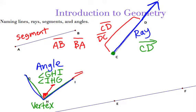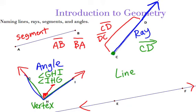Angles can go on forever. Our last one is a line. A line goes on forever in both directions — a lot of times you'll have little arrows to show that. Since we're naming a line, which is closely related to a segment or ray, you're going to use two letters, not three like our angle.